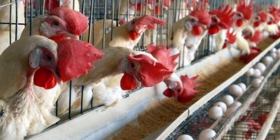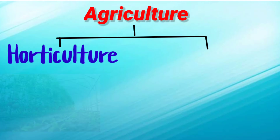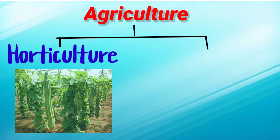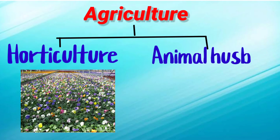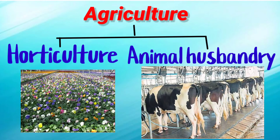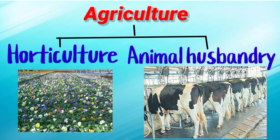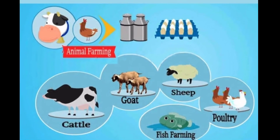Besides crop production, several other related activities like poultry, fishing, and sericulture come within the scope of agriculture. Agriculture can be broadly classified into: first, horticulture — the cultivation of fruits, vegetables, and ornamental plants; and second, animal husbandry — the rearing and management of domestic animals. We will learn about animal husbandry later in the chapter.